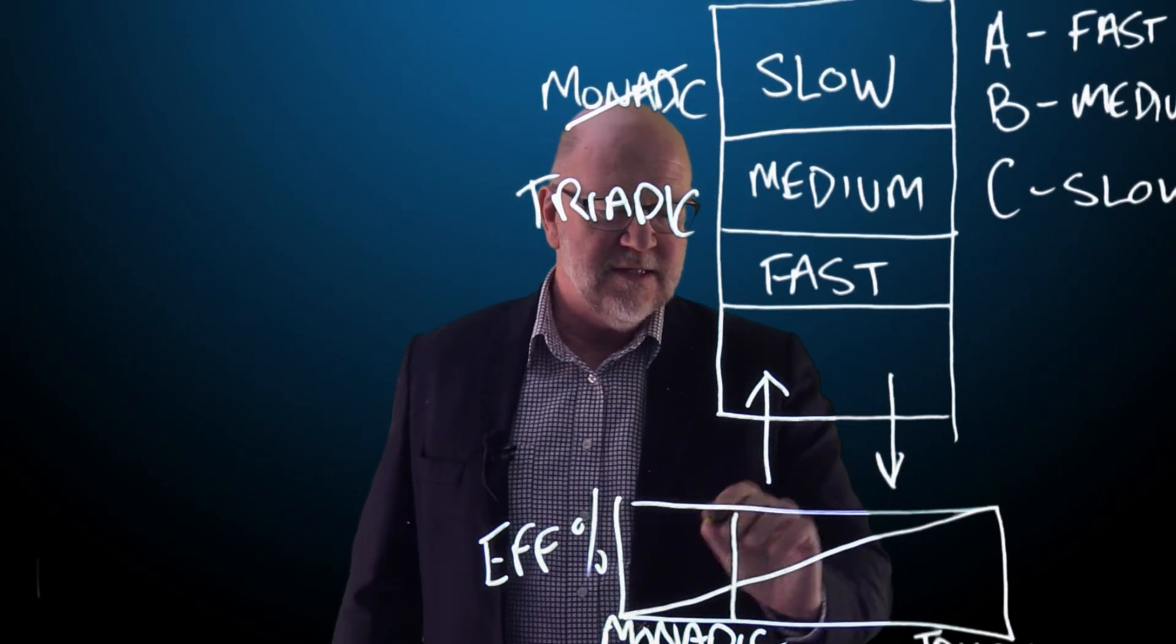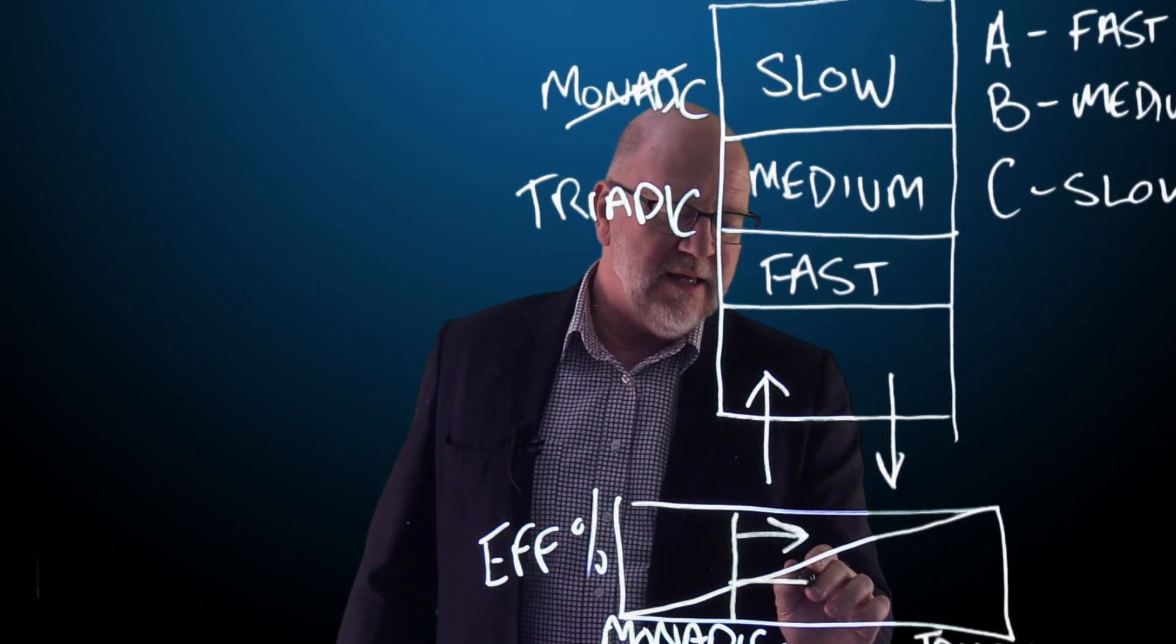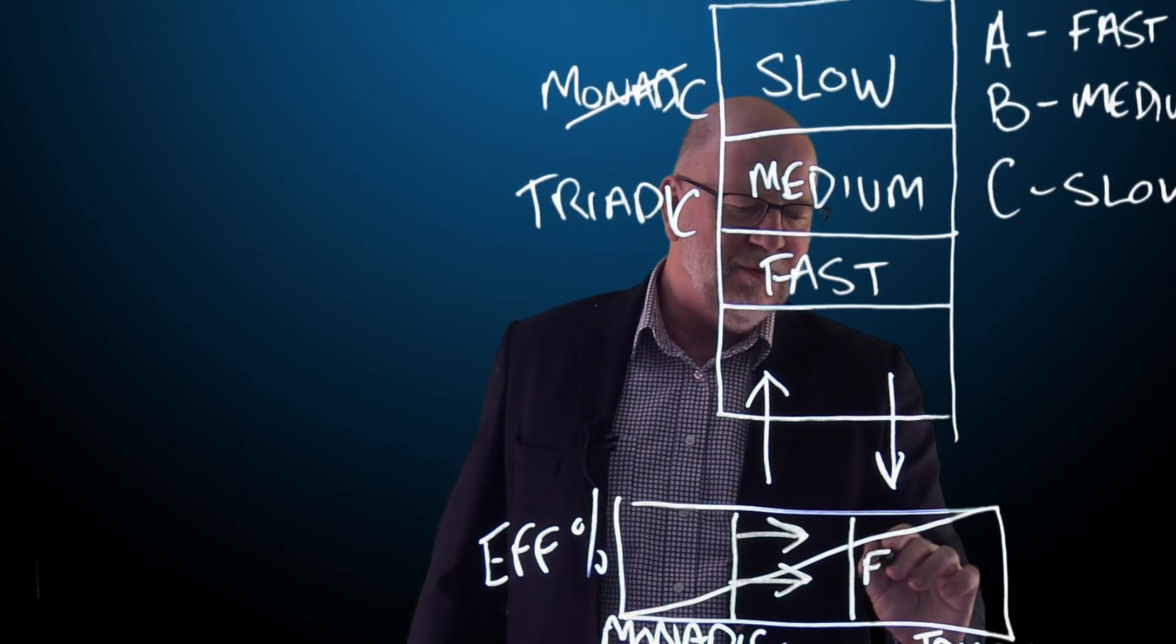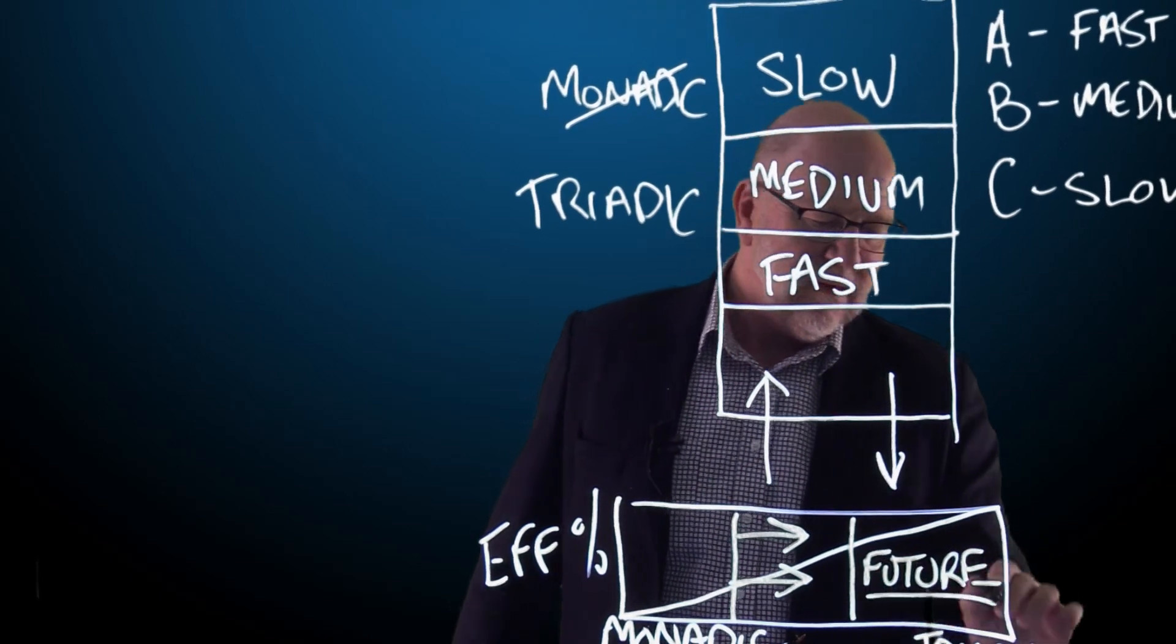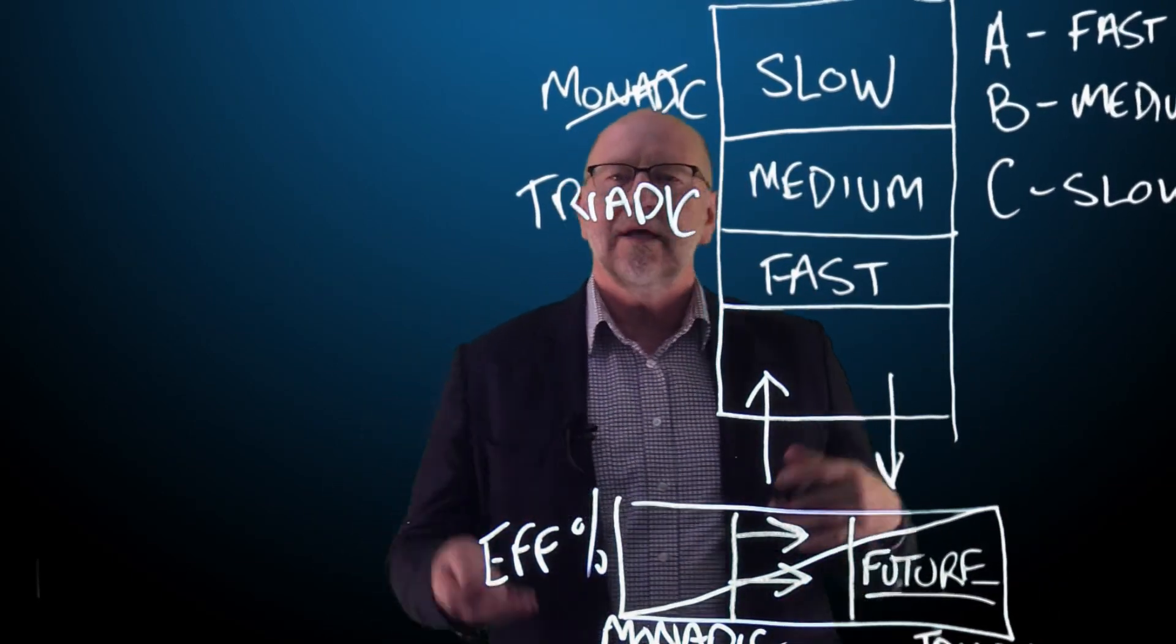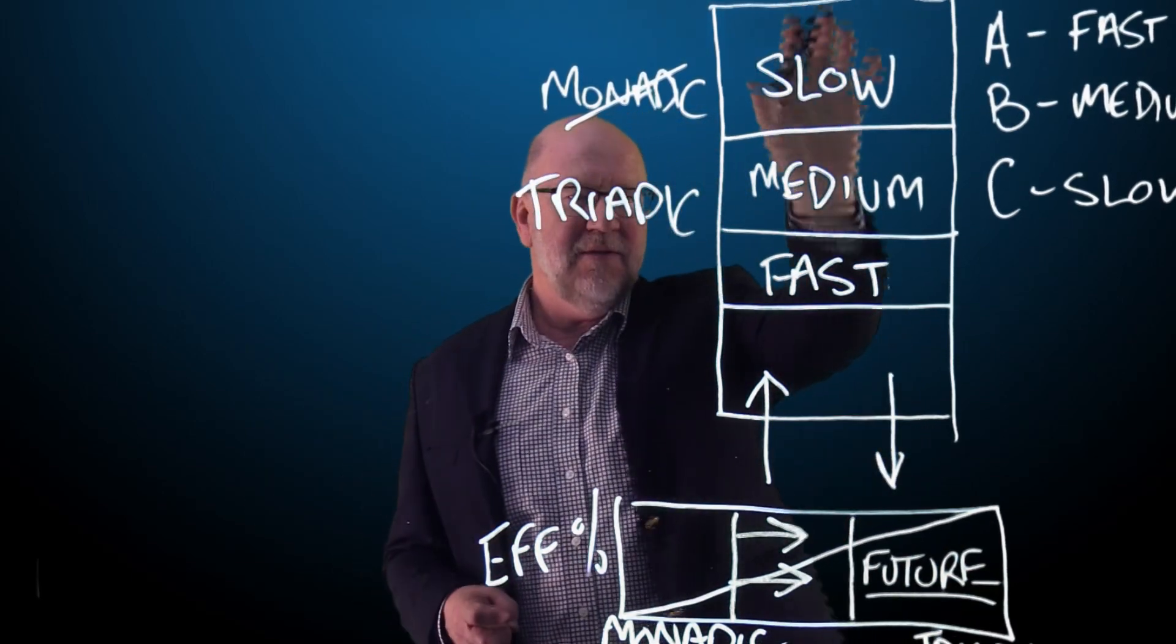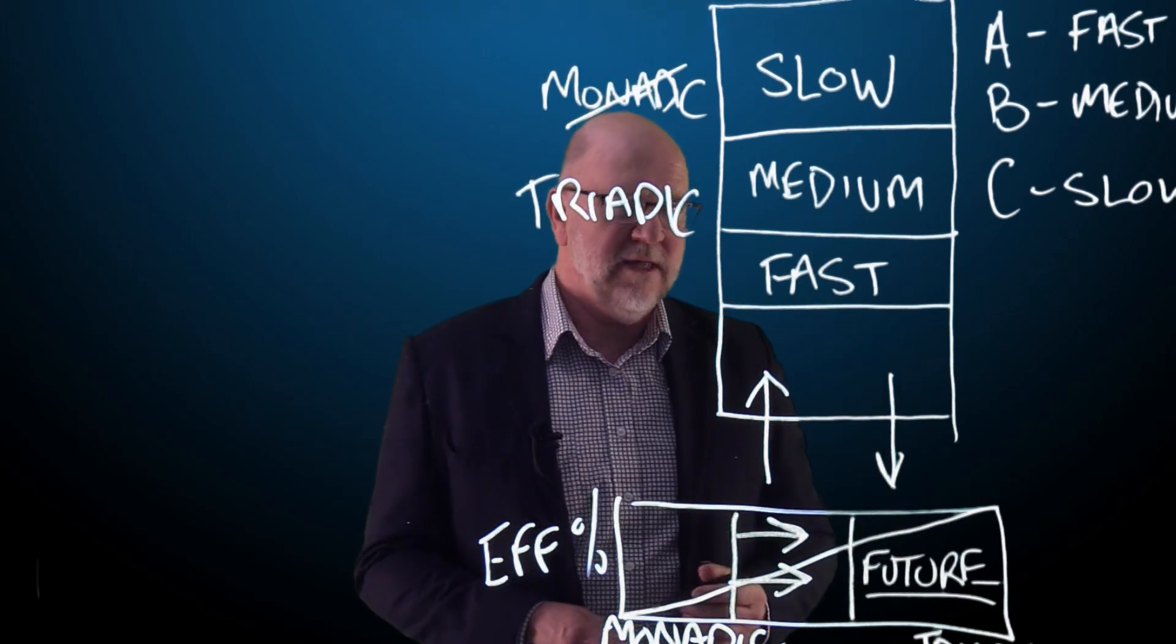So if we're here as a starting point, we're able to apply triadic thinking to our warehouse, then we're able to move to a future point where we will be much more efficient. The key is to have our people, people working in the warehouse, being able to focus on each of these areas, the slow, medium, and the fast goods, and to plan and place stock accordingly.